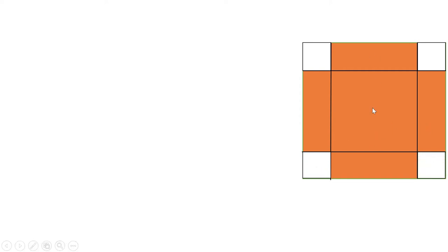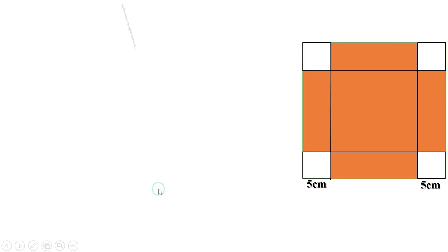By bending upwards we get a box. The volume of the box should be half a liter and the height should be 5 centimeters. When we bend upwards, this length is the height, which is 5 centimeters — this is also 5 centimeters on all sides. We have to find the side of the original square.